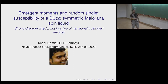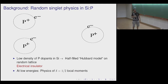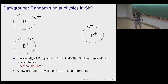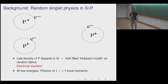We know that if you put phosphorus inside silicon at dilute concentration, each phosphorus atom behaves like a giant hydrogen atom — there's an extra electron orbiting around a charge center. As you increase the density of the phosphorus dopants, these electrons find it easier to hop from one atom to the next. It's really a picture of a disordered half-filled Hubbard model on a random three-dimensional lattice.